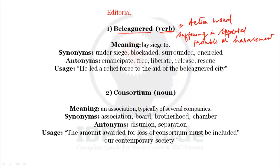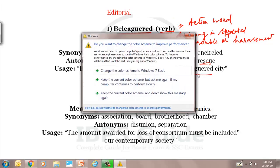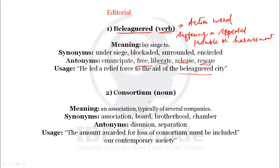Synonyms of beleaguered: under siege, blockaded, surrounded, and encircled. Antonyms will be emancipate — emancipate means free from all the troubles and controls. So free, liberate, release, and rescue are all antonyms of beleaguered. Uses: 'He led a relief force to the aid of the beleaguered city' — to save the city that was in a situation of suffering, harassment, or trouble.